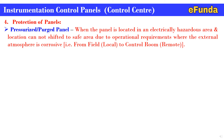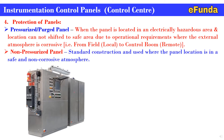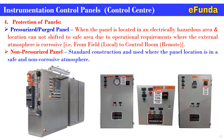Protection of panel: first, pressurized panel — when the panel is located in an electrically hazardous area and the location cannot be shifted to a safe area due to operational requirements, or where the external atmosphere is corrosive. The photograph shows a purge panel which is an enclosed panel located in a hazardous area with related accessories and instruments mounted inside. Second, non-pressurized panel — standard construction used where the panel location is in a safe area and a non-corrosive atmosphere. The photograph shows normal panels used for installation of various instruments and indicating devices.